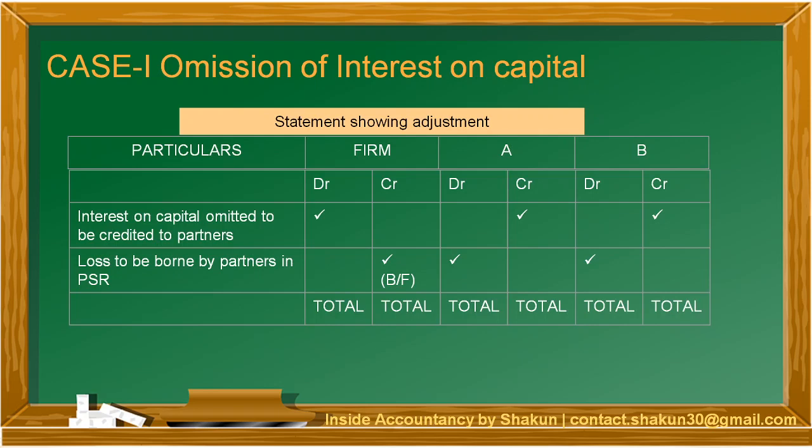First, we have the particulars column. Then we have a column for the firm, and then as many partners as you have, you will have that many columns. Each column — the firm column and the partners' columns — is divided into two parts: debit and credit. The firm column is essentially the profit and loss appropriation account. The DR and CR represent the debit and credit of the P&L appropriation account, and the partners' DR and CR represent the debit and credit of partners' capital accounts. So the P&L appropriation account and partners' capital accounts are shown together in this statement showing adjustment.